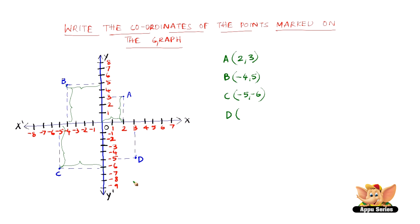Now let us consider point D. We can clearly see that the distance of point D from the y-axis is 3 and from the x-axis is -5. Since it lies in the fourth quadrant, the coordinates of point D are (3, -5).